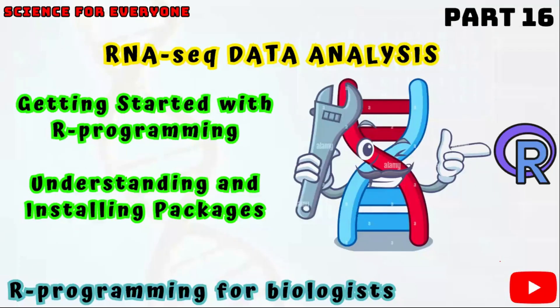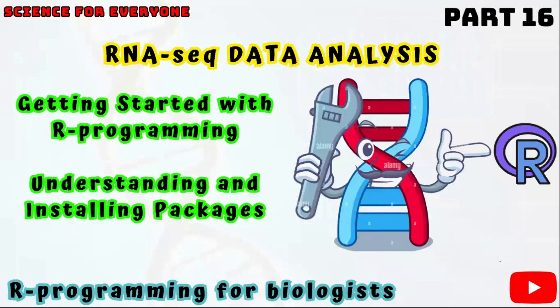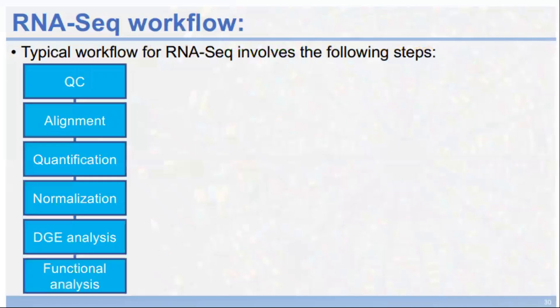As you know, I have started a video series related to RNA sequencing data analysis, and this is Part 16 of that series. In the previous video, I explained and practically performed how to quantify your genes after alignment. We get an Excel file where genes are present in rows and gene counts are present in columns. Now we have to analyze this matrix using RStudio.